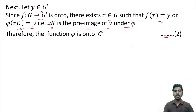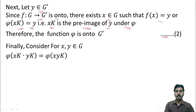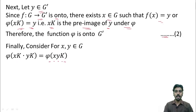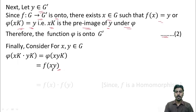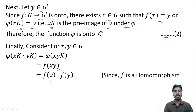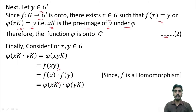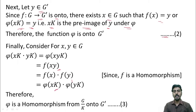And finally, we shall show that phi is a homomorphism. Consider phi of xK into yK, which is equal to phi of xyK. We know that xK into yK is equal to xyK. By the definition of phi, phi of xyK is equal to f of xy. Since f is a homomorphism, f of xy can be written as f of x into f of y. Again, by the definition of phi, f of x is phi of xK and f of y is phi of yK. So, we have shown that phi is a homomorphism from G by K onto G dash. Let me take this statement as 3.